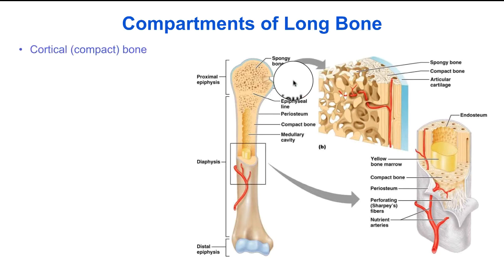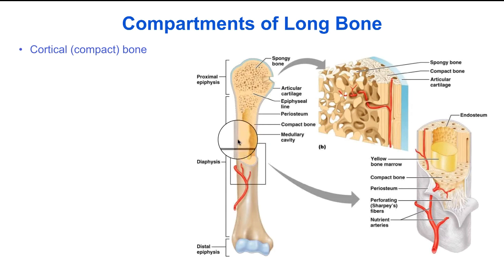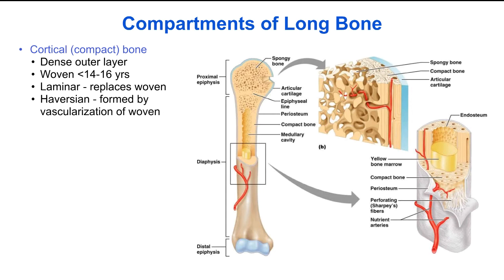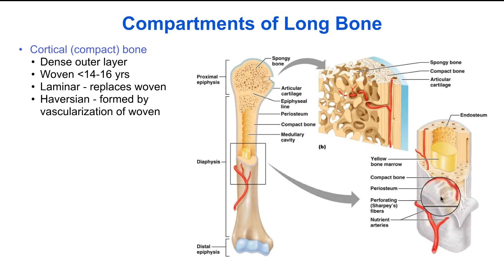Long bone consists of different types and compartments. There's the compact cortical bone, which is the dense outer layer. There are different types of cortical bone, including woven bone in skeletally immature bones, lamellar bone which replaces woven bone after skeletal maturity or after an injury, and haversian bone which is formed by vascularization of the woven bone.